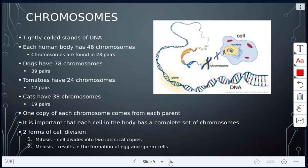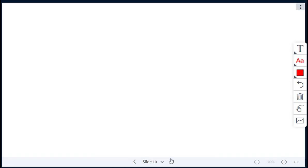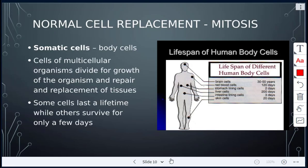Now we're going to move on and start talking about cell division. Last class we talked about the two forms: mitosis, where cells divide into identical copies, and meiosis, which is cell division to form the gametes — the egg and sperm cells. We'll talk about mitosis first.